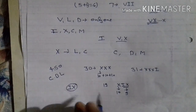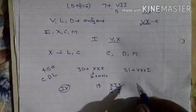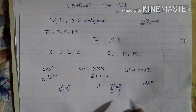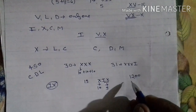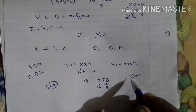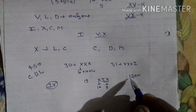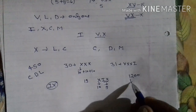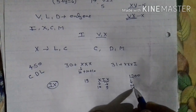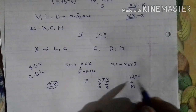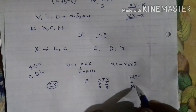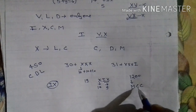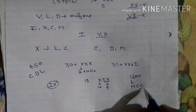If we want to write 1200: the symbol for 1000 is M. And for 200 we can write double C, because C can be repeated up to 3 times. So 1200 is written as M followed by CC.